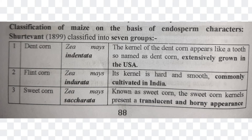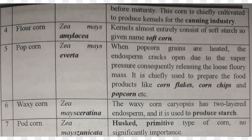Sweet Corn is Zea mays saccharata. By the name, it is sweet. Its kernel has a translucent and horny appearance before maturity, and this is chiefly cultivated to produce kernels for the canning industry.